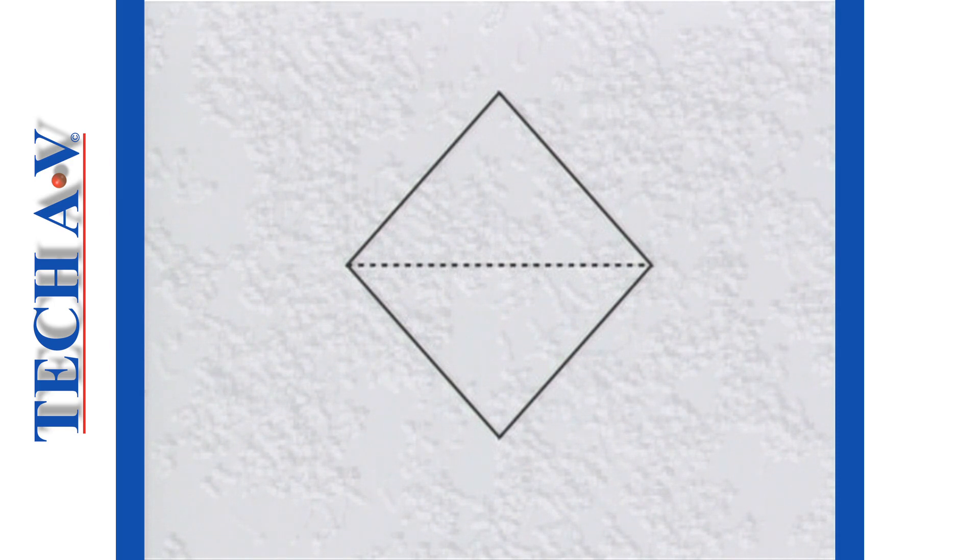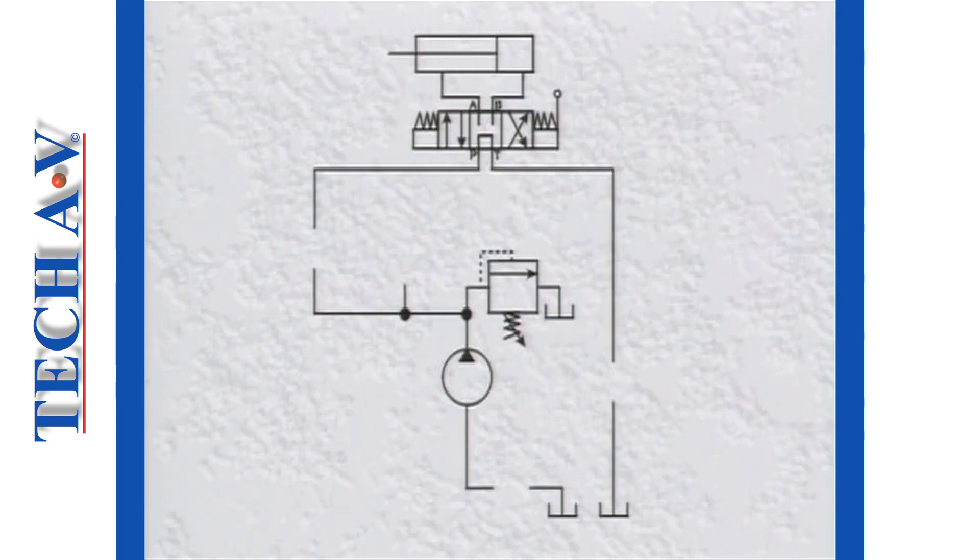The three filter symbols on our circuit are a tank strainer, a pressure line filter, and a return line filter. Note that the symbols are placed into their relevant working lines.